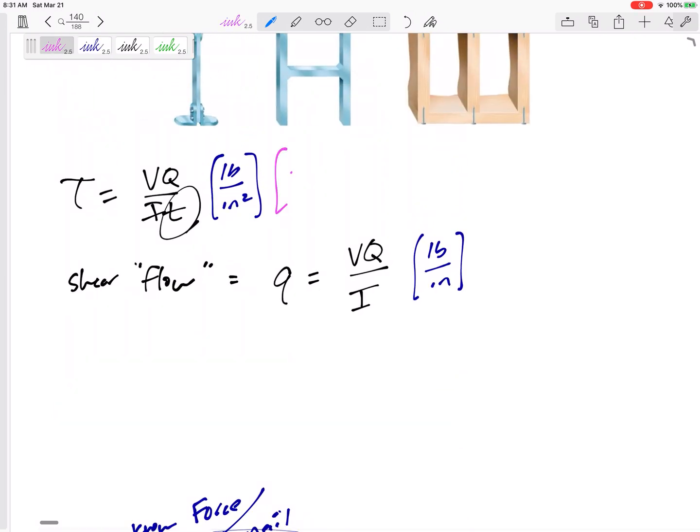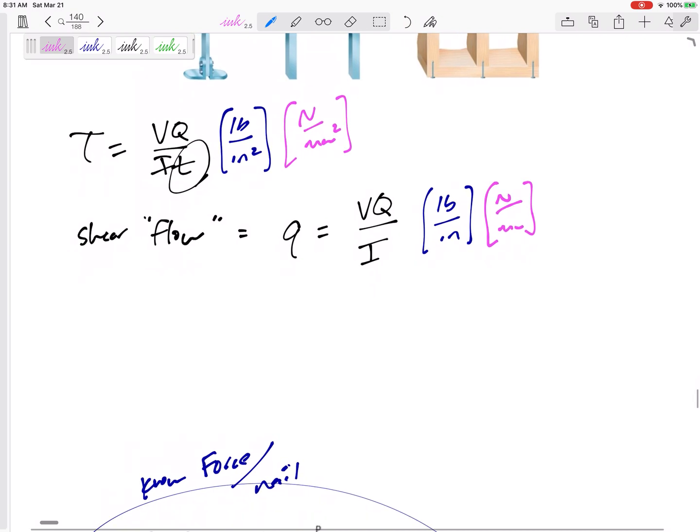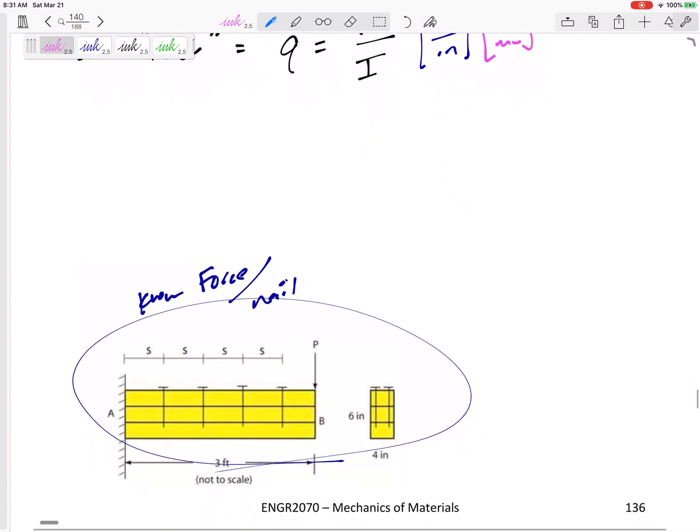And we could say newtons per millimeter or something like this. Let's talk about the units here. Units could also be newtons per millimeter squared, right? Or newtons. So our shear flow would be newtons per millimeter. If we know the force per nail,